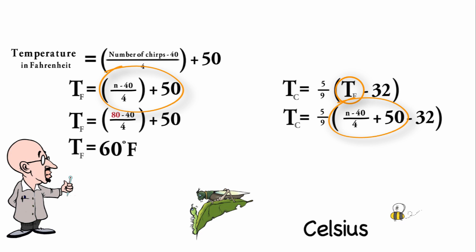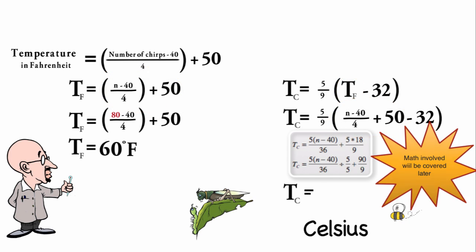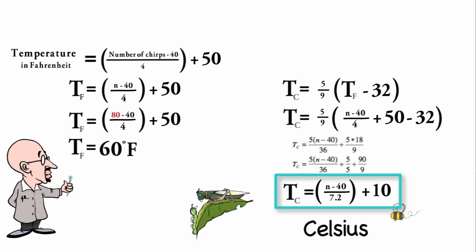That gives us a fairly complex looking equation but we can simplify that to the temperature in Celsius is equal to N minus 40 divided by 7.2 plus 10. We are left with an expression that directly relates the temperature in Celsius to the frequency of cricket chirps.